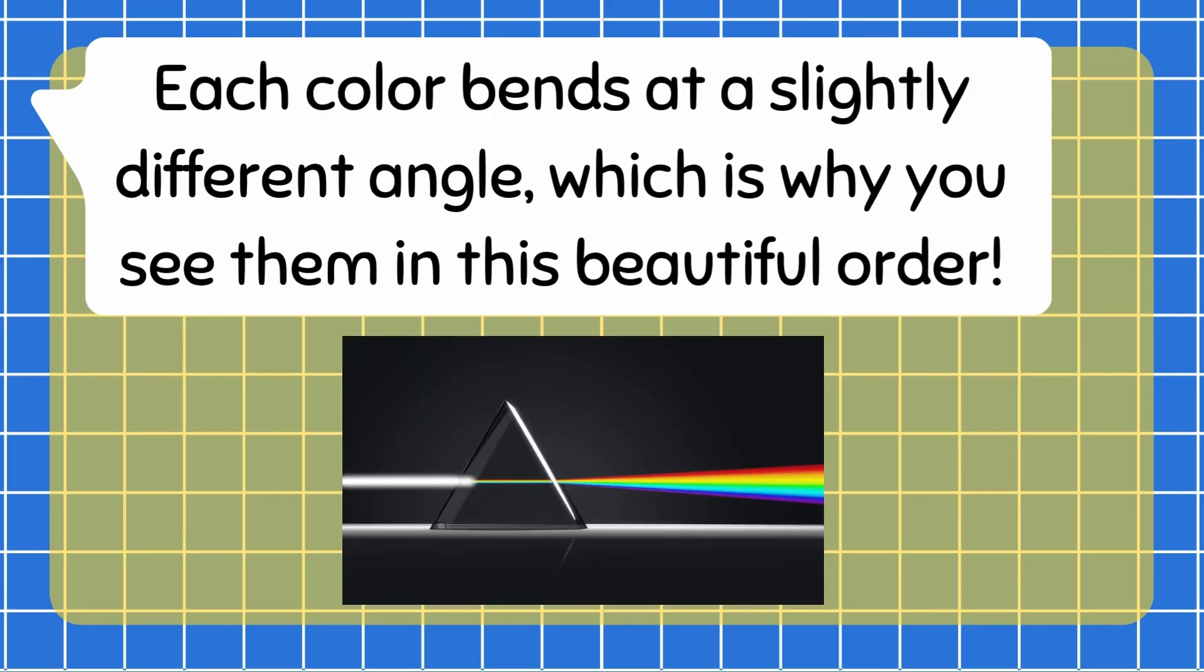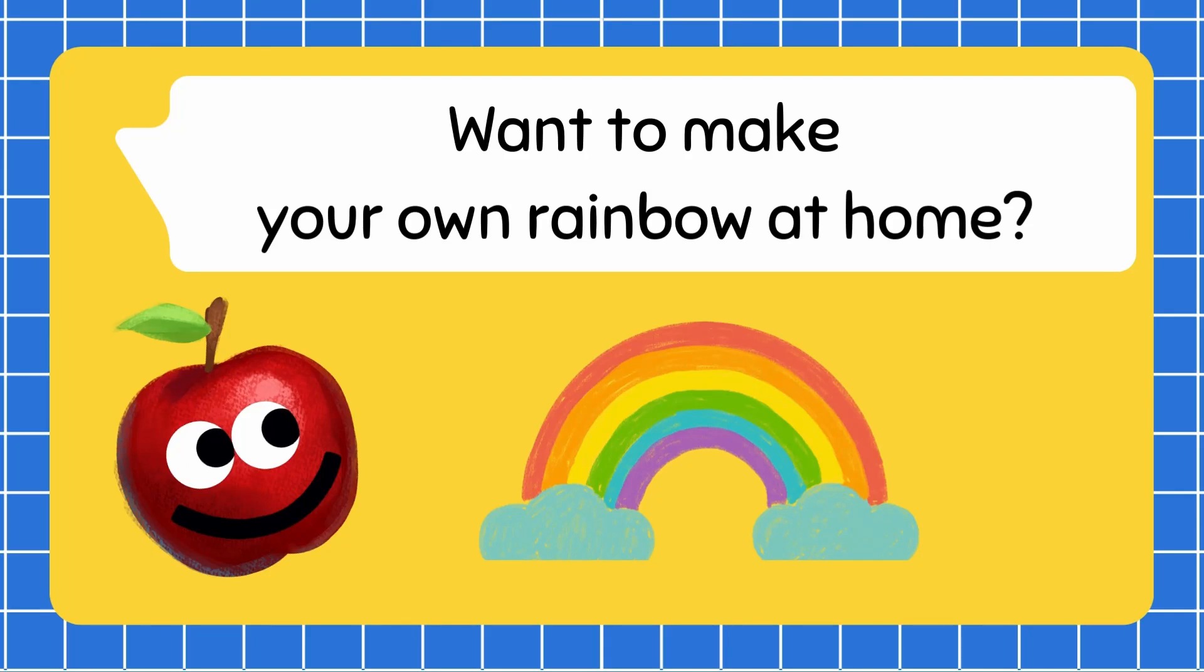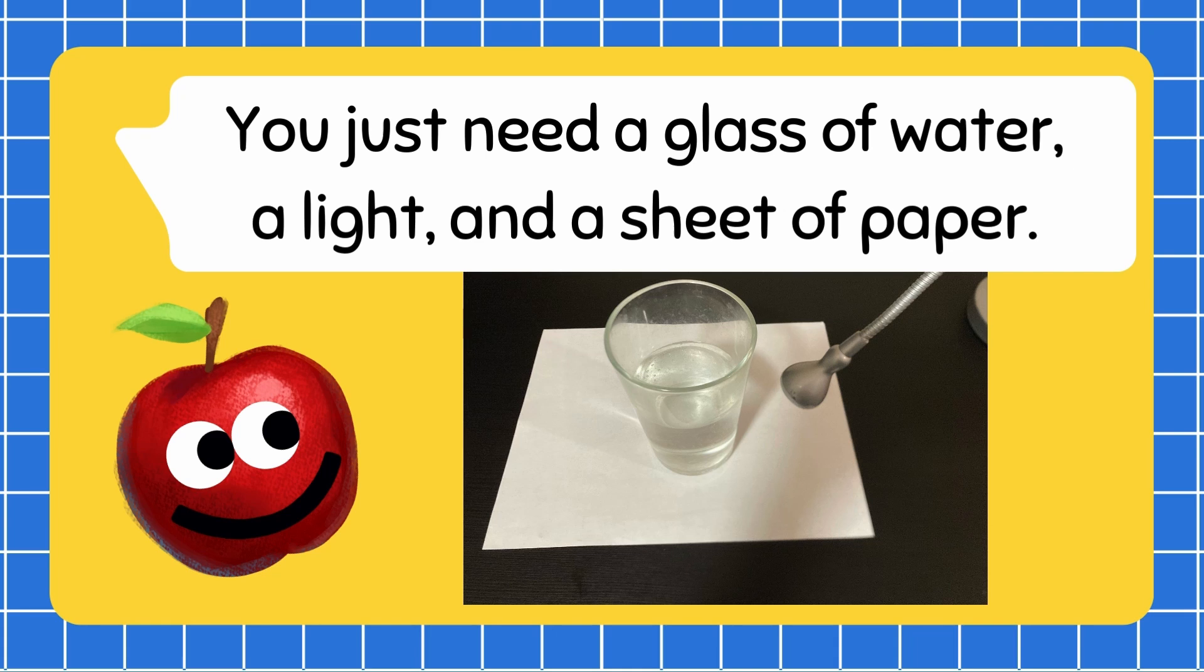Each color bends at a slightly different angle, which is why you see them in this beautiful order. Want to make your own rainbow at home? You just need a glass of water, a light, and a sheet of paper.